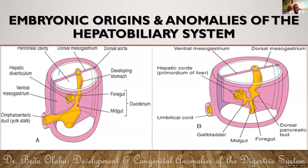For the development of the liver and biliary system, initially there is an outgrowth from the anterior part of the lower foregut. That outgrowth is called the hepatic diverticulum. The hepatic diverticulum grows into the ventral mesentery, or ventral mesogastrium, and immediately divides into two parts. The cranial part, which is bigger, is called the pars hepatica.